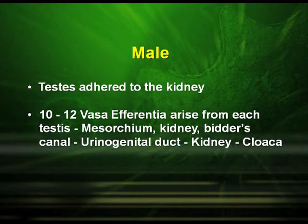The male reproductive system includes testes adhered to the kidney. There are about 10 to 12 vasa efferentia arising from each testis, which pass through the mesorchium, kidney, bidder's canal, urogenital duct, kidney and cloaca.